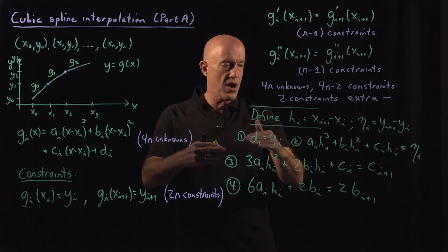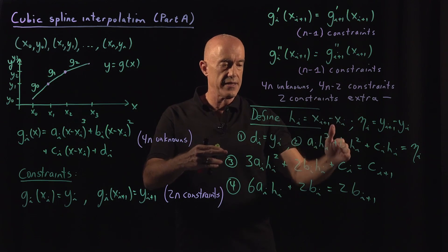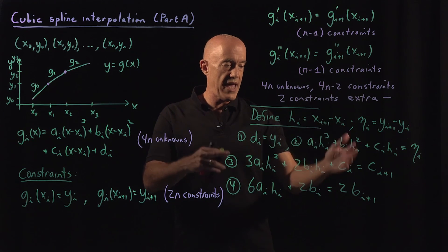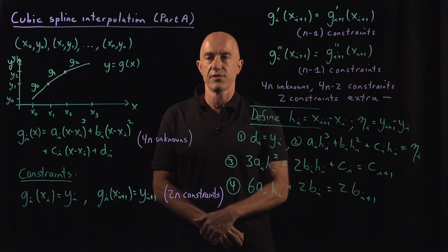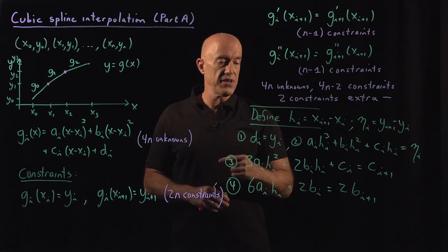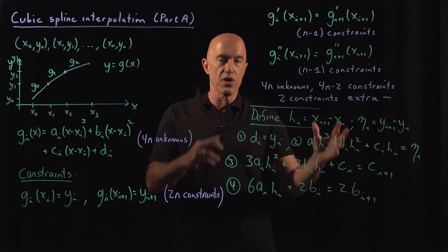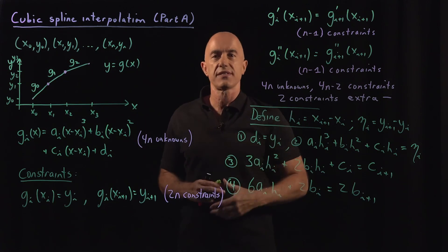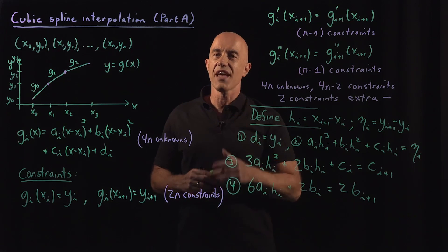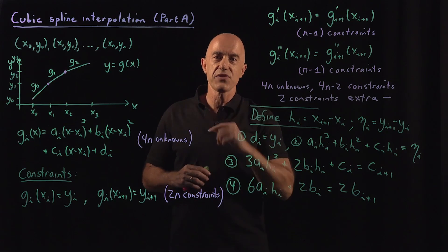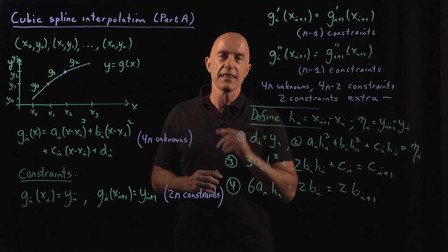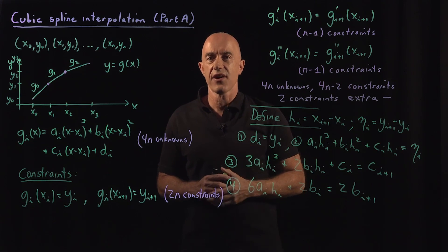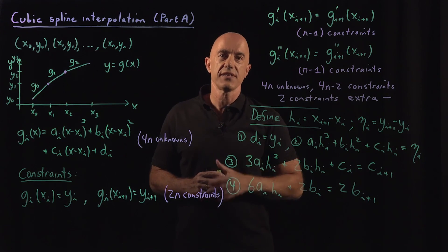Here I've shown you the equations we get by applying our constraints — these are the equations for the a, b, c, and d coefficients. In the next video, part b, I will put this all together and show you that the end result is actually a matrix equation, which is very nice. We can use matrix algebra in MATLAB to solve the resulting matrix equation. I'm Jeff Chasnoff — thanks for watching and I'll see you in the next video.